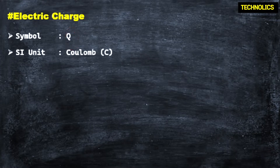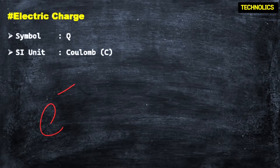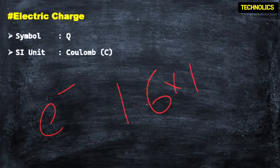So, electrons are charged. Electrical charge is the electron. This electron has a charge. The charge of an electron is 1.6 × 10⁻¹⁹ Coulombs.